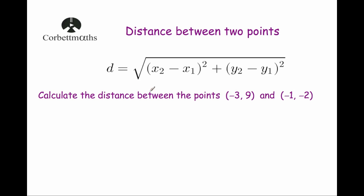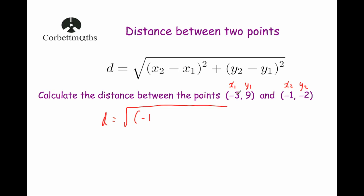So let's label the points. Here's our first question: calculate the distance between the points negative 3, 9 and negative 1, negative 2. I'm going to call my first coordinate x1y1 and my second coordinate x2y2. Substituting into the formula: d equals the square root of x2 minus x1, so that's minus 1 minus negative 3, squared.